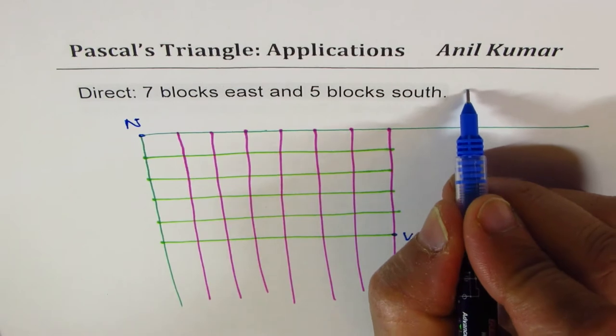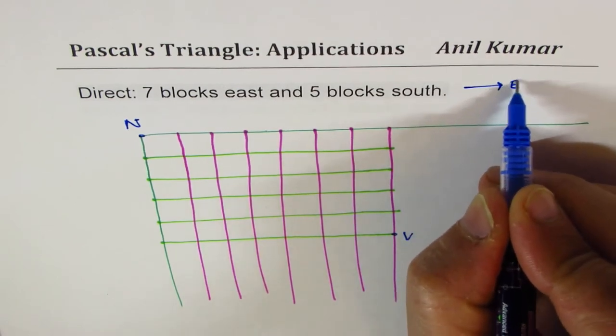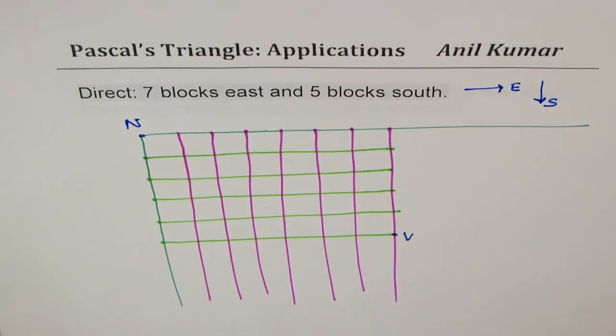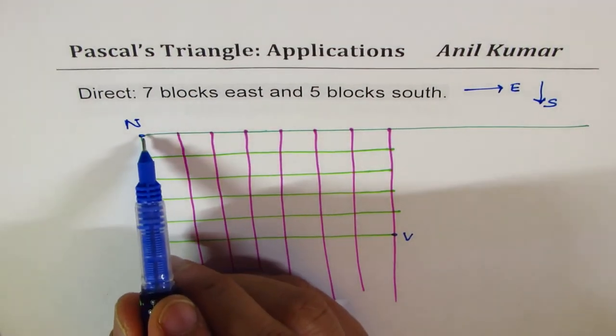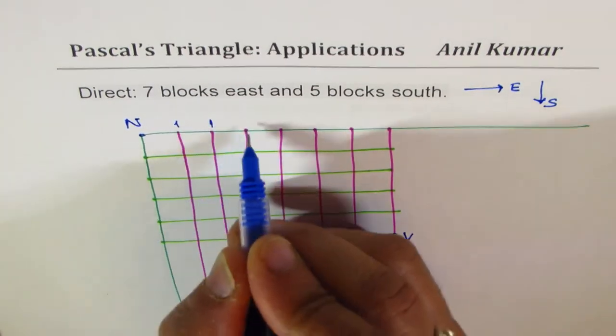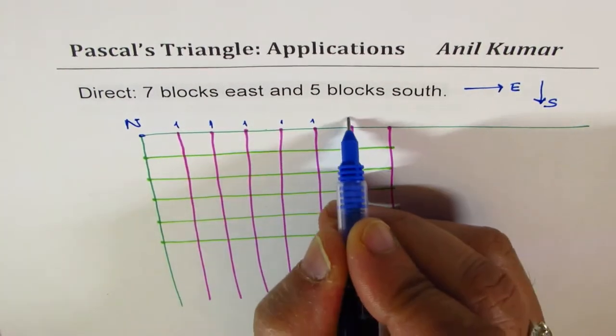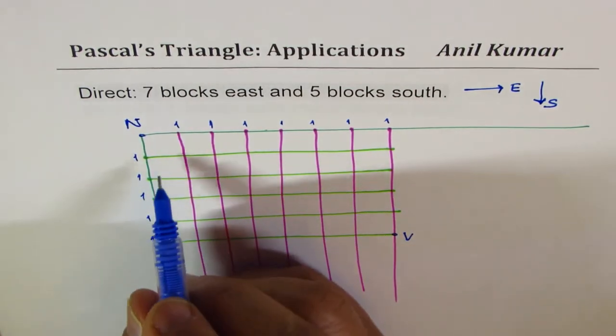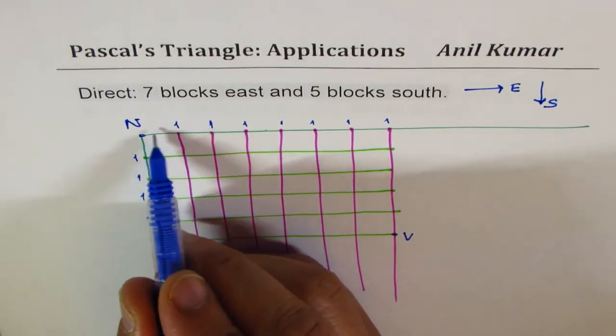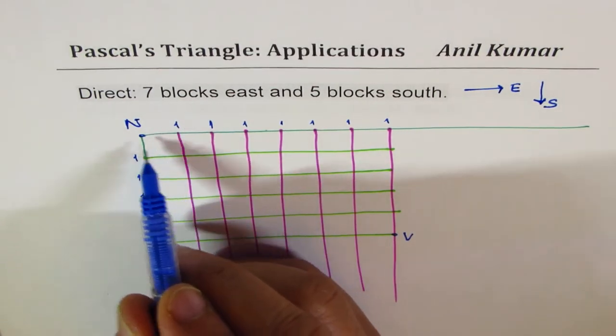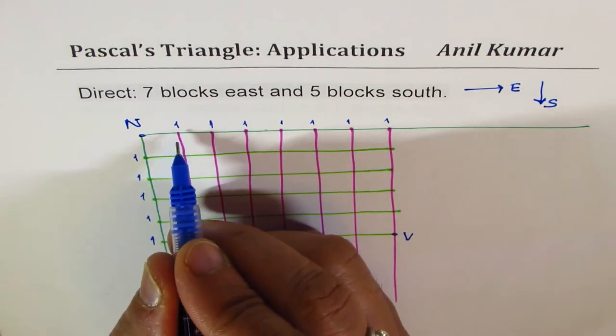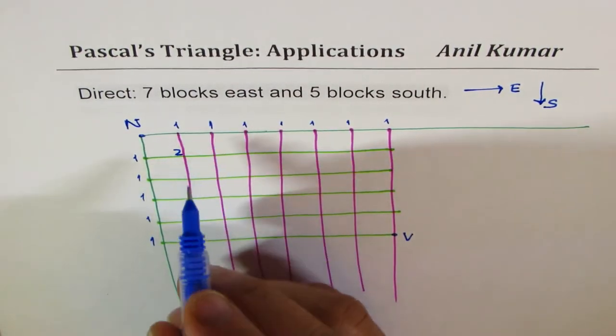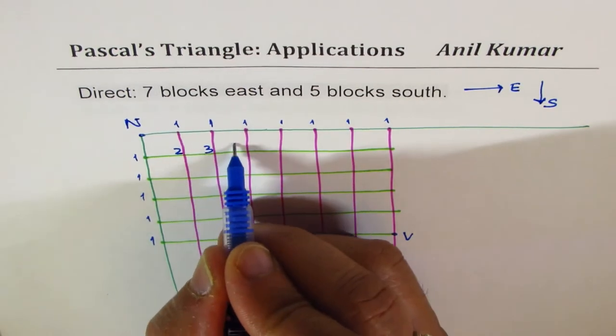Nirvan can only move east or south. Now, if Nirvan is going east, there is only one way. So this is all one way. Similarly, if Nirvan goes only south, there is only one way. At this location, there are two ways. Nirvan can go east and south or south and east. So we just add the previous two. And that is what Pascal's triangle principle is.